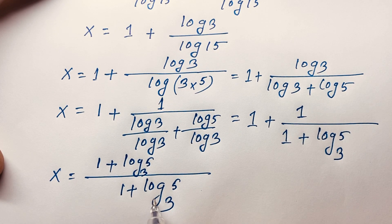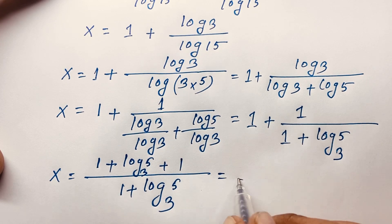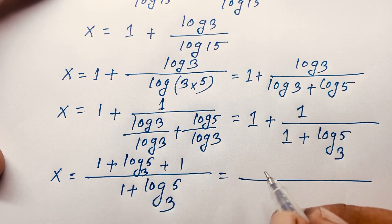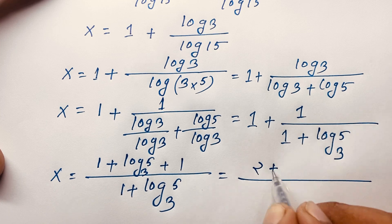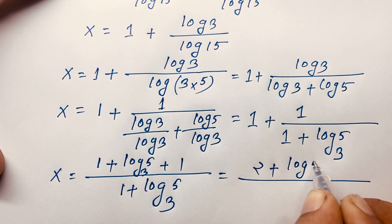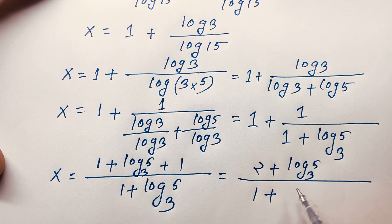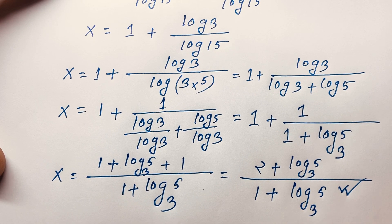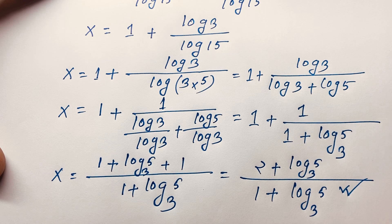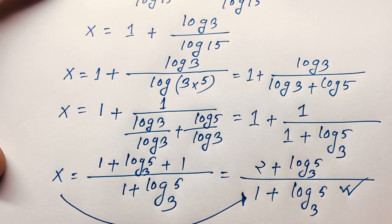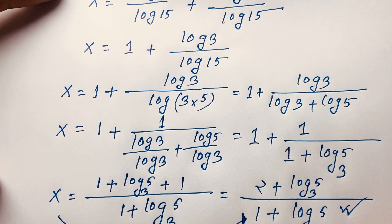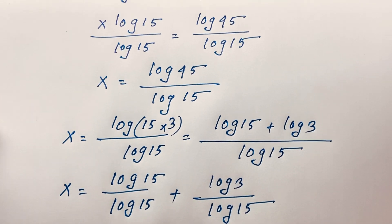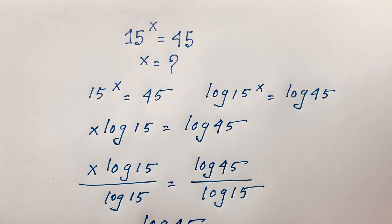Simplifying, 1 times (1 plus log 5 base 3) gives 1 plus log 5 base 3 in the denominator, and the numerator gives 1 plus 1, which is 2. So the final answer is x equals (2 plus log 5 base 3) over (1 plus log 5 base 3). Thank you all — if you enjoyed this video please subscribe to my channel. Goodbye, take care.